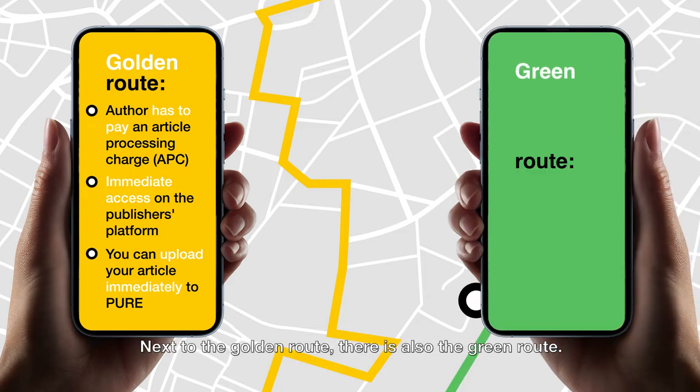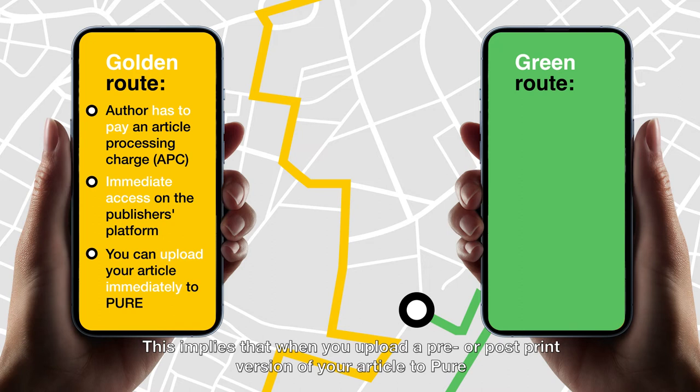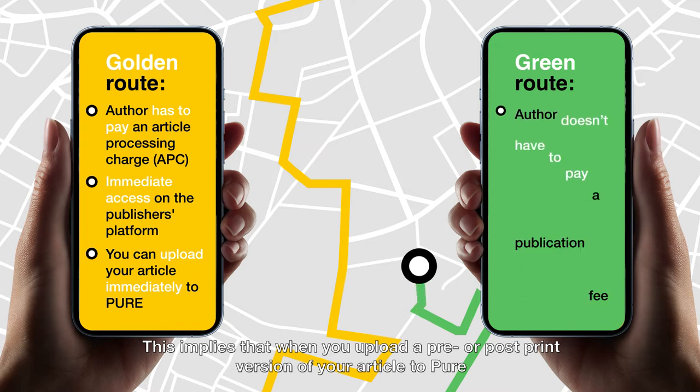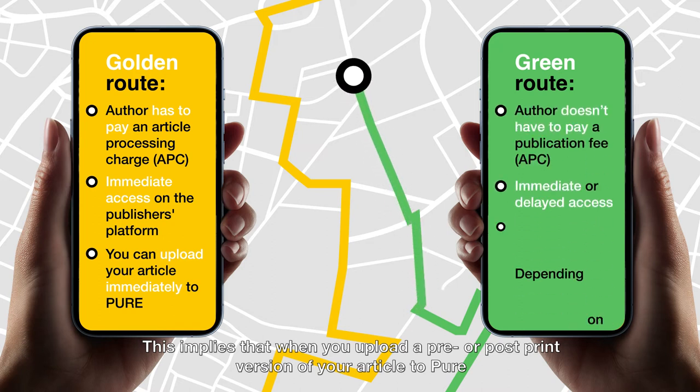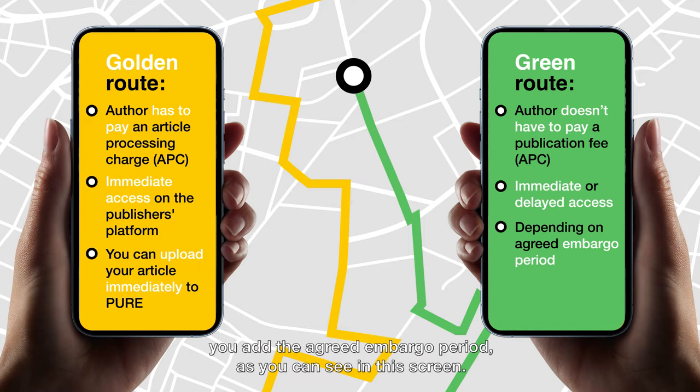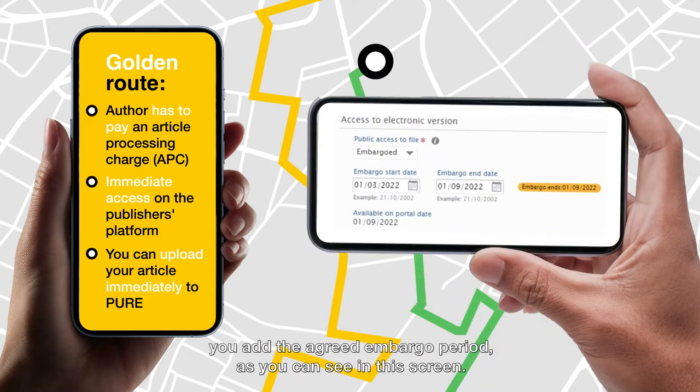Next to the Golden Route there is also the Green Route. This implies that when you upload a pre- or post-print version of your article to Pure, you add the agreed embargo period, as you can see in this screen.